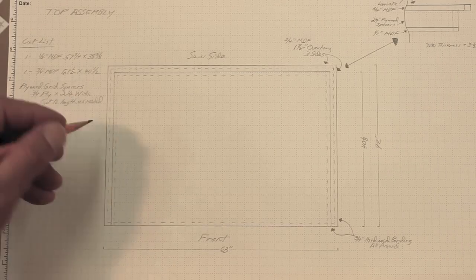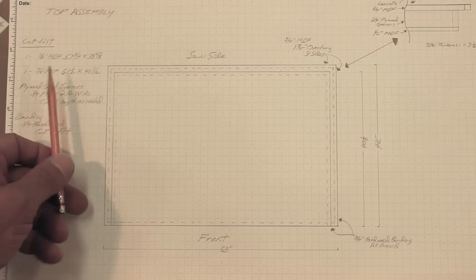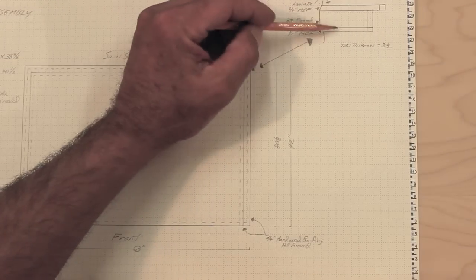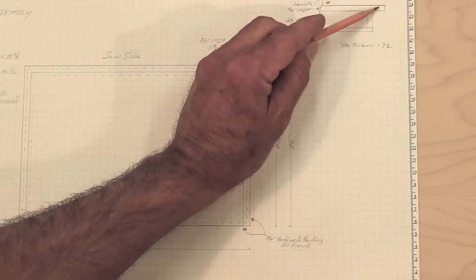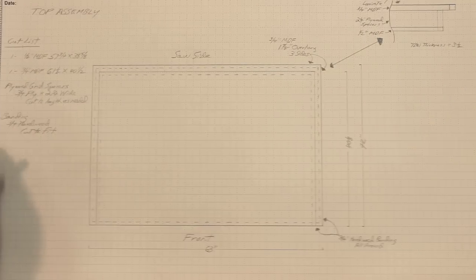I think that'll actually be pretty nice. And then this is the top detail showing the sizes to cut both the 1/2-inch MDF and the 3/4-inch MDF. And a little construction detail here of how it's going to all go together with the hardwood edging around. So, ready to get started.